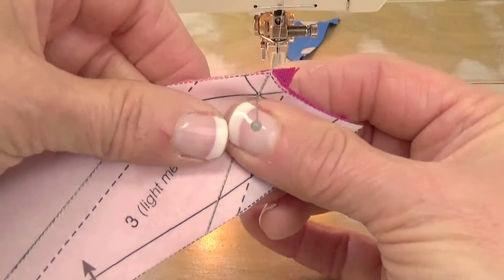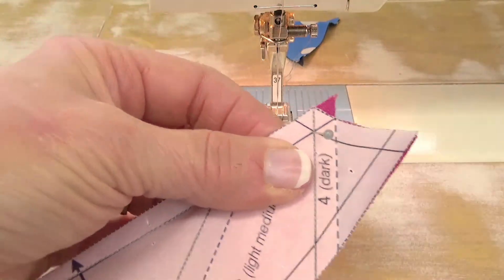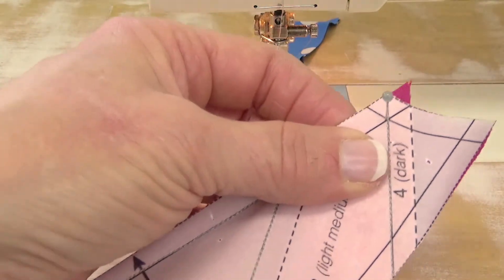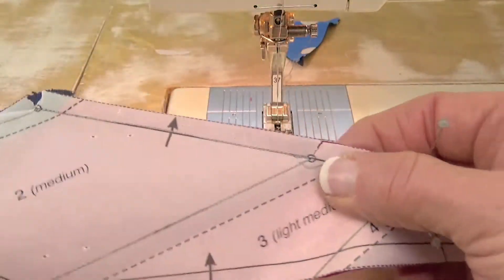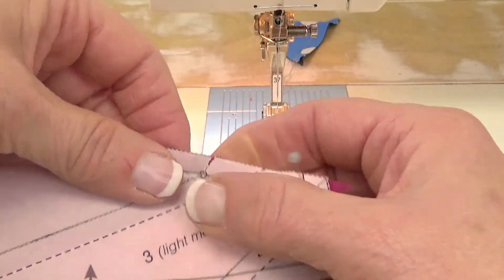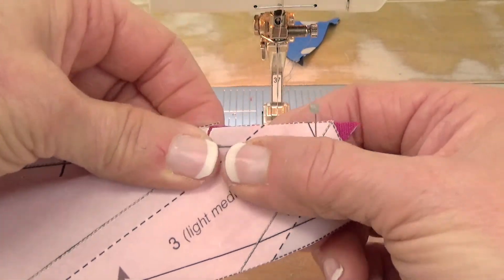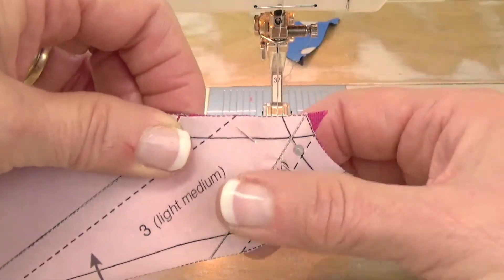Like that. Hold that straight up and down. Don't let that move because you know it's correct. Get your pin in there. And then let this crease up. And it's not going to crease up as much as the other one, but it'll crease up a little bit. Keep your positioning pin in.